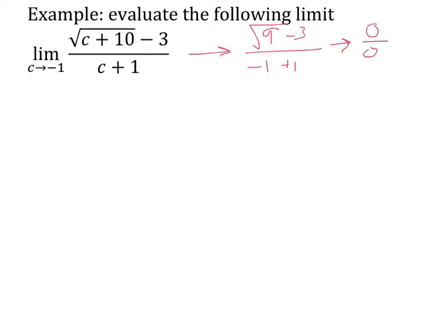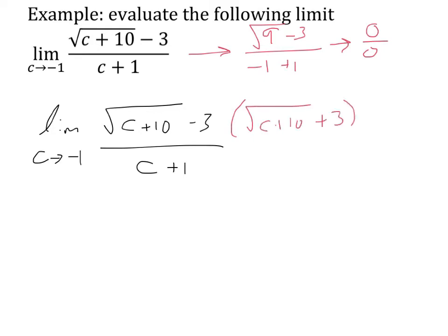We need to try and factor and cancel, but factoring doesn't work for this. When you have a radical expression, we're going to try multiplying top and bottom by the conjugate. I have my limit as c approaches negative 1. I have my square root of c plus 10 minus 3 all over c plus 1, and then I'm going to multiply the numerator by the square root of c plus 10 plus 3, and the denominator by the square root of c plus 10 plus 3. This looks like it's going to be a train wreck, but I promise, it works out really well.